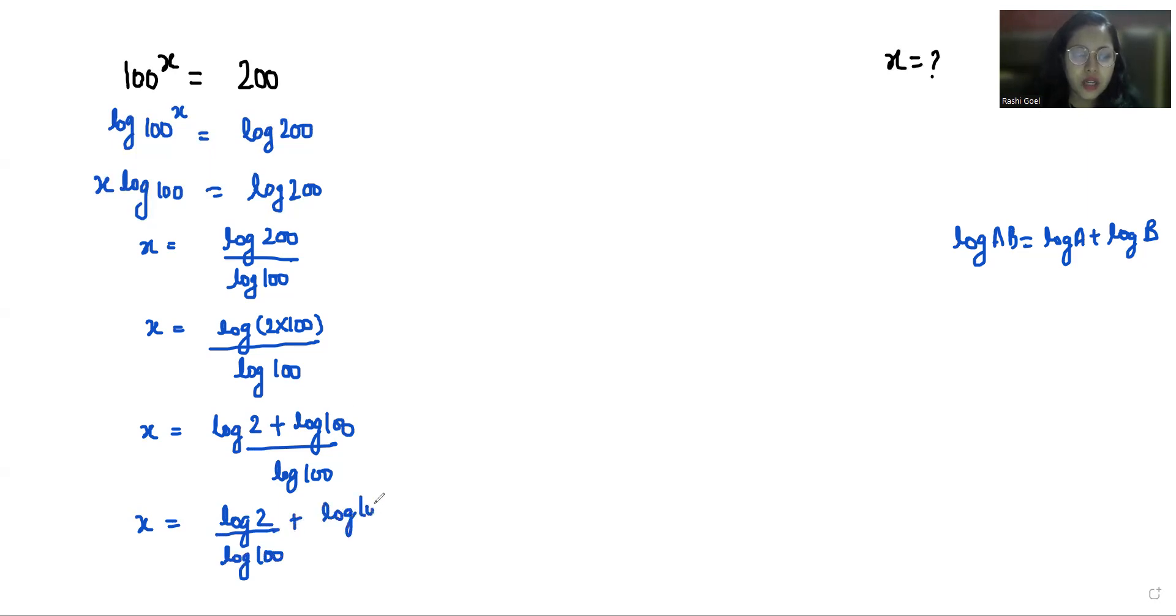So x equals log 2 by log 100 plus we can cancel out log 100 by log 100 and write 1 in place of that. So x equals log 2 by log 100 plus 1.